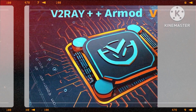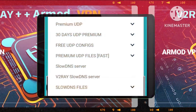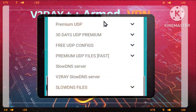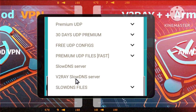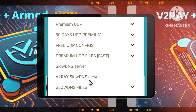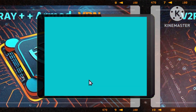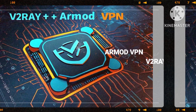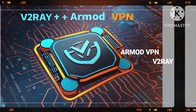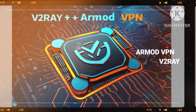Step 3: Selecting the v2ray slow DNS server. From the menu, select the v2ray slow DNS server option. This particular server offers both slow DNS and v2ray, providing an extra layer of security. But for this setup, we're looking specifically for the v2ray configuration, which will enhance your online security.